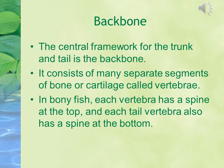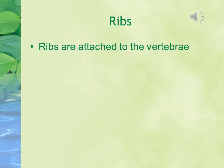The backbone is the central framework for the trunk and tail. It consists of many separate segments of bone or cartilage, and these segments are known as vertebrae. In bony fish, each vertebra has a spine at the top, and each tail vertebra also has a spine at the bottom. Ribs are attached to the vertebrae of the fish.